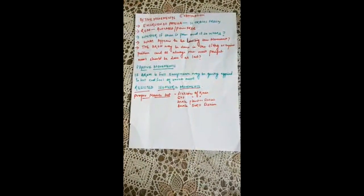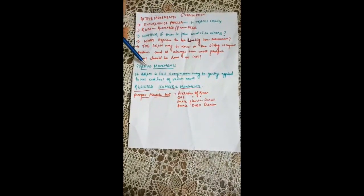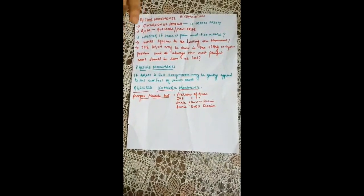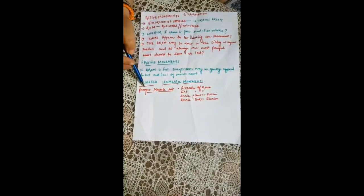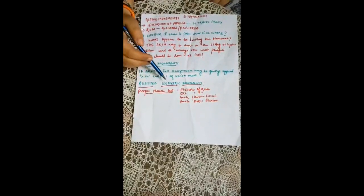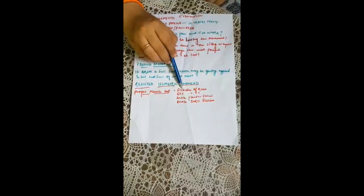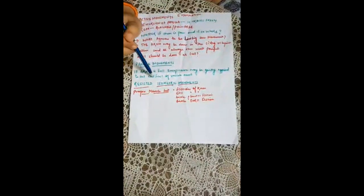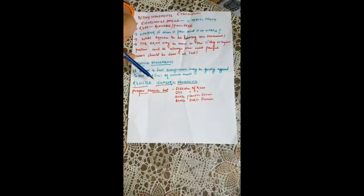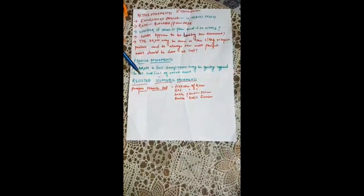After active movement, the examiner moves to passive movement. If active range of motion is full, overpressure may be applied very gently to check for pain. After passive movement, the examiner performs resisted isometric movement to test whether muscles are working properly. Movements tested include knee flexion, knee extension, ankle plantar flexion, and ankle dorsiflexion — isometric muscle contractions are done to assess performance in all these positions.